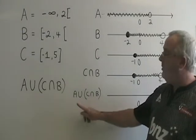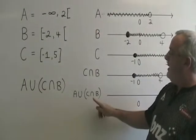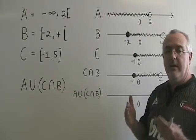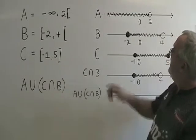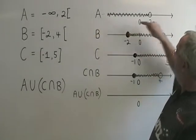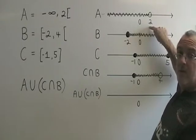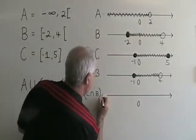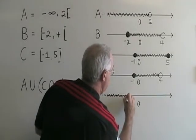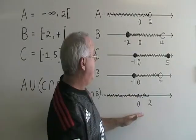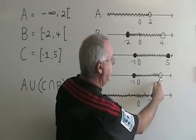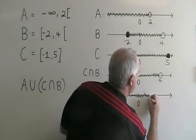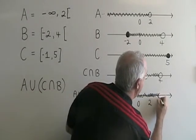Now I have to do a union between set A up here and the intersection of C and B that I have here. Union means if it is in either set, it has to be in the answer. The numbers from negative infinity up to two are in set A, so they have to be in the answer. And the numbers from two till four are in the intersection, so they have to also be in the answer. So we do not stop at two. We go to four.